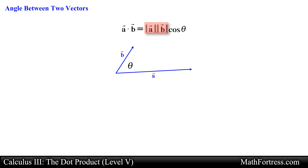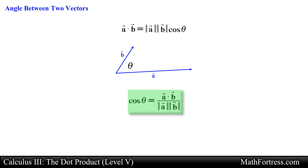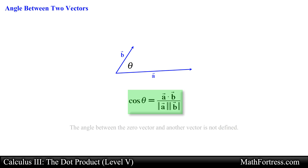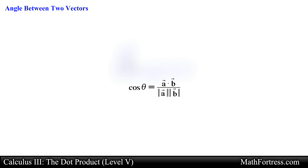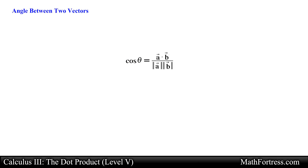Notice that the magnitude of vector A times the magnitude of vector B simplifies to a real number, so we can divide this expression out, obtaining a rearranged form of the dot product. In this case, cosine of theta equals the dot product of vector A and vector B divided by the product of the magnitude of vector A and the magnitude of vector B. Note that the angle between the zero vector and another vector is not defined here. Let's go ahead and go over a couple of examples that make use of this rearranged form of the dot product.